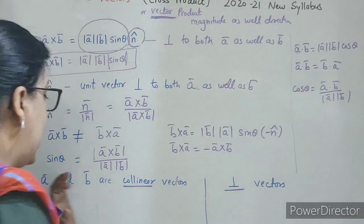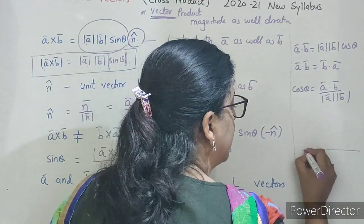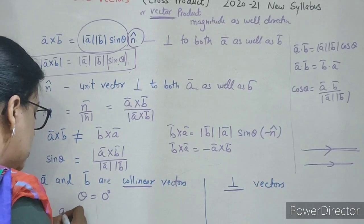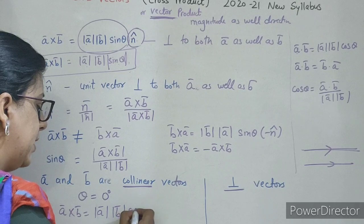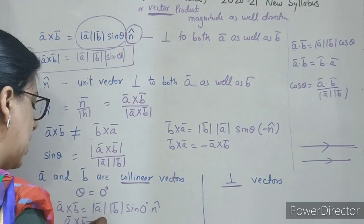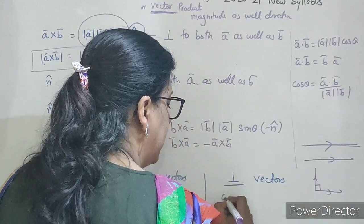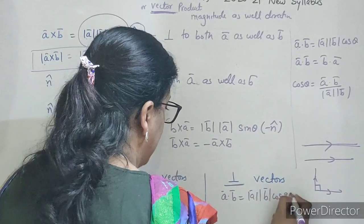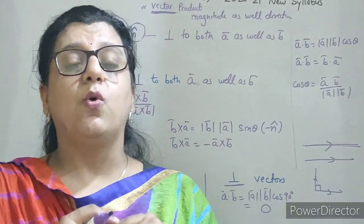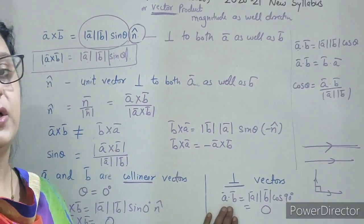If A and B are collinear vectors — agar A aur B collinear hain, unke beech ka angle kya ho jayega? Zero. Collinear matlab ek hi line ke upar hain, ya they are parallel. So A cross B kya hota hai? Mod A, mod B, sin zero, n̂. But sin zero ki value kya hoti hai? Zero. To isliye A cross B kya ho jayega? Zero. Agar A and B are perpendicular, angle beech mein kya banega? Ninety degree. Yeh bohot important condition yaad rakhni hai: jab do vectors aapas mein collinear honge, parallel honge, to unka cross product zero hoga. Aur jab do vectors perpendicular hote hain, to unka dot product zero hota hai.